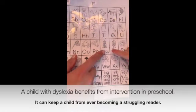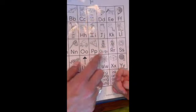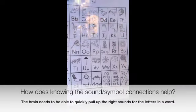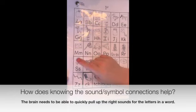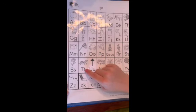Q U, queen. Q U, queen. R, robot. R, robot. S, sun. S, sun. S, rose, Z. S, rose, Z. T, tiger. T, tiger.